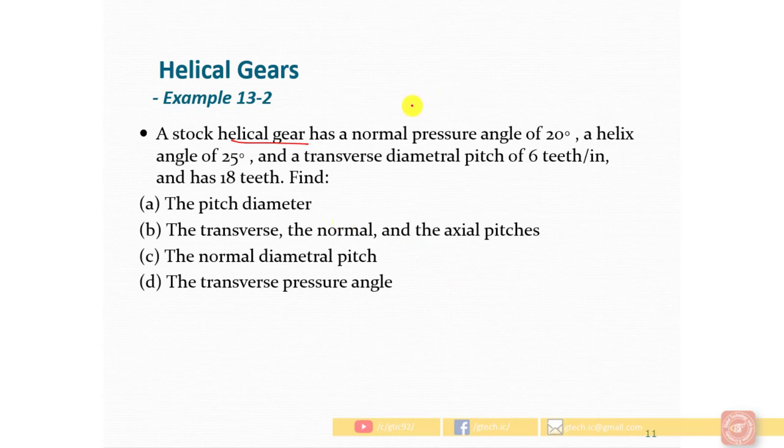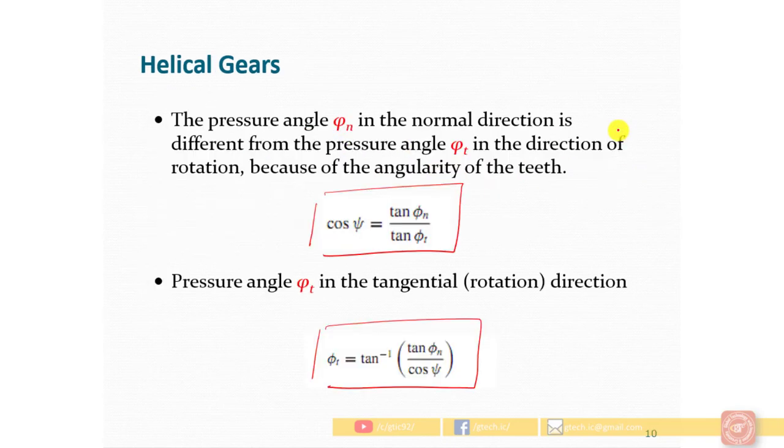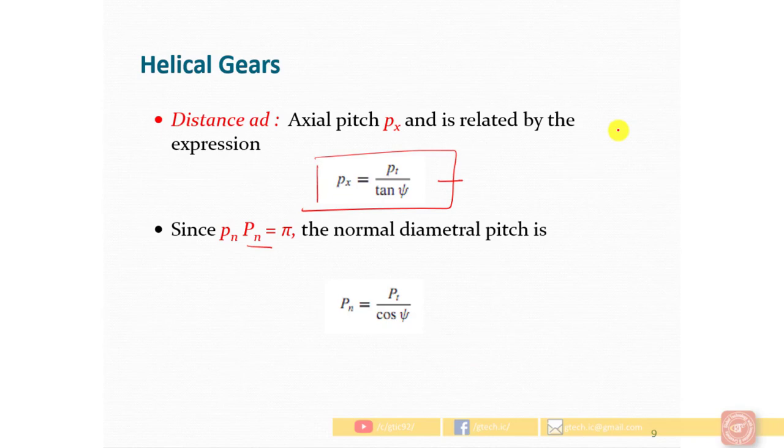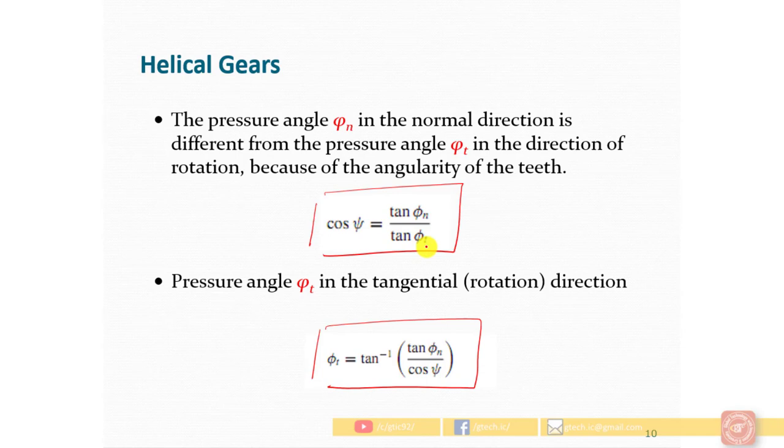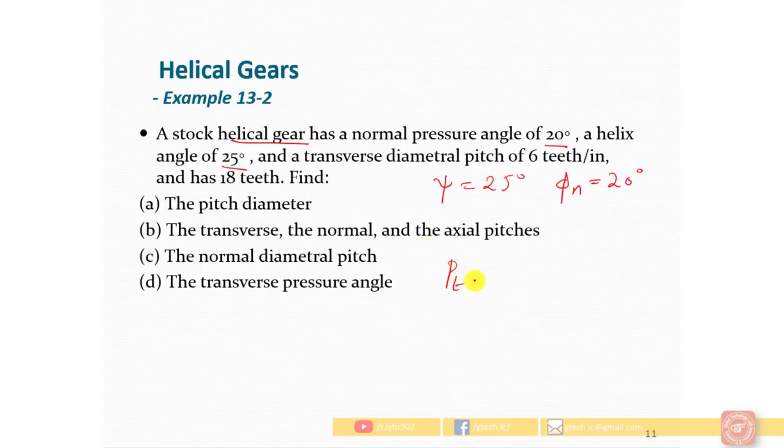We will use these five formulas. The given values are: normal pressure angle 20 degrees, helix angle 25 degrees, transverse diametral pitch of 6 teeth per inch, and the gear has 18 teeth.